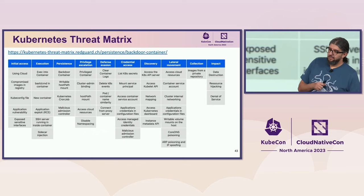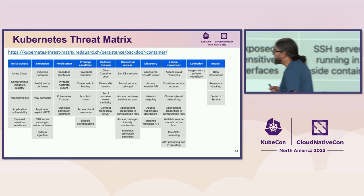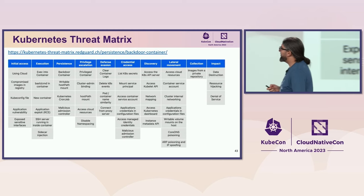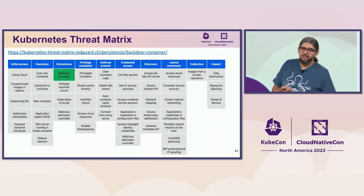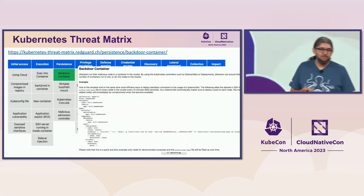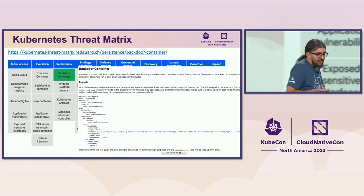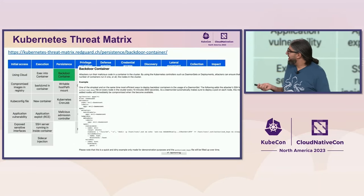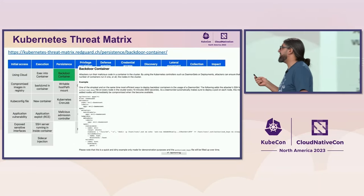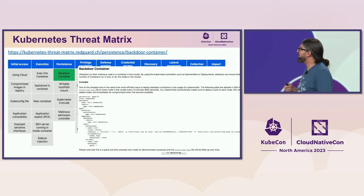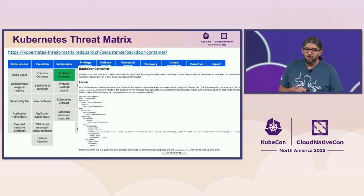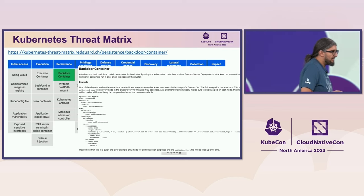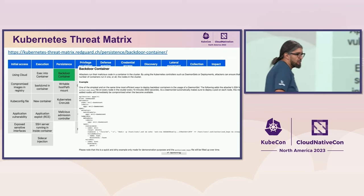A second example that is really interesting for those just starting threat modeling is from a company called Redquart. Their examples are quite simple — they give you a Kubernetes manifest that you can deploy and use to mimic an attack. This is something really interesting for someone starting to learn adversary emulation for Kubernetes.